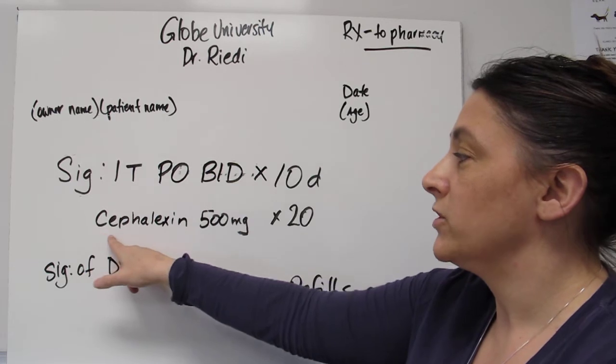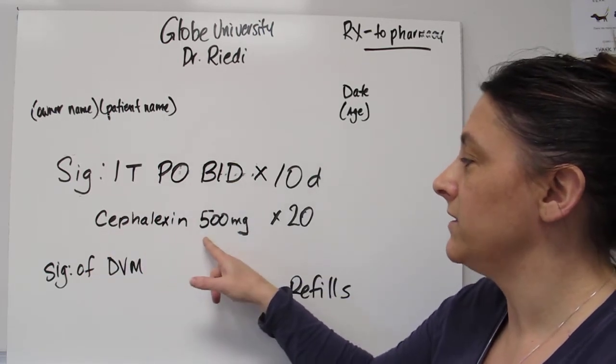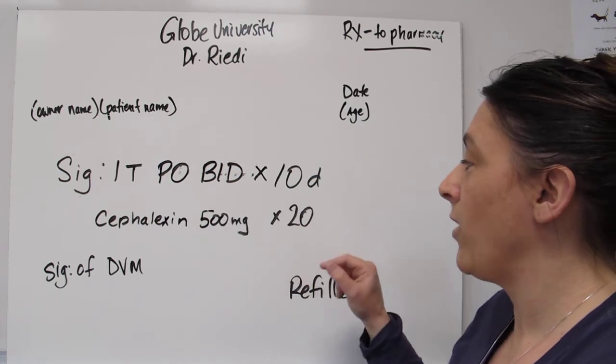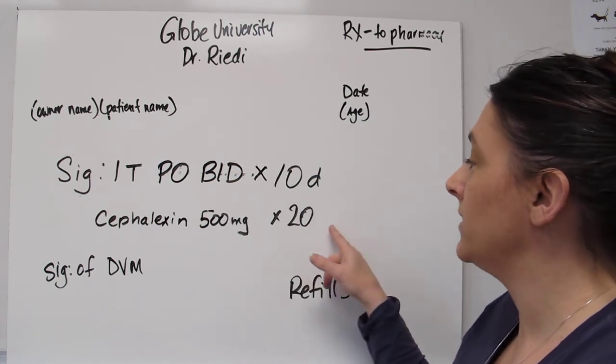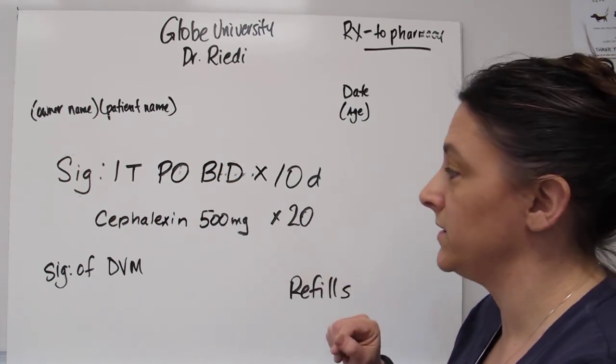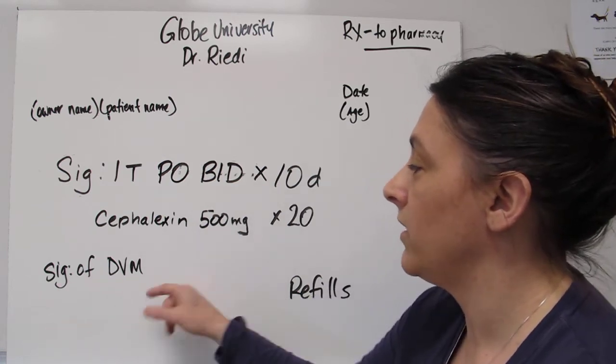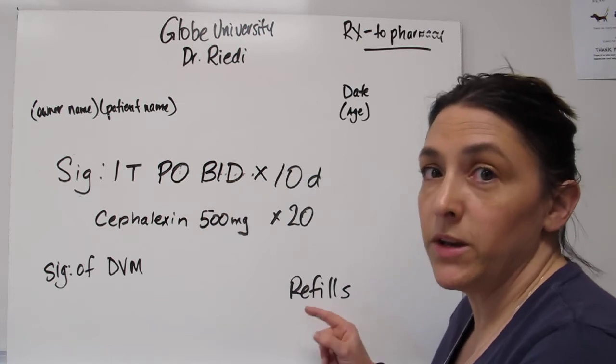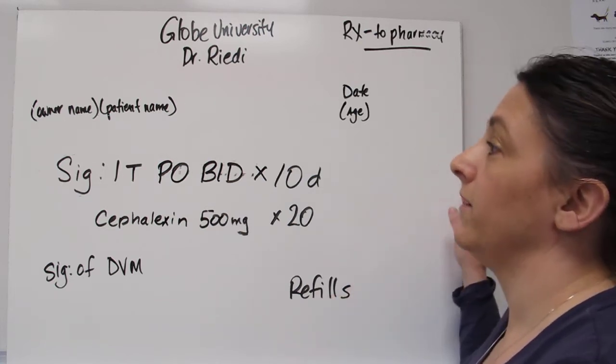The name of the drug, Cephalexin, the strength of the drug 500 milligrams, and then how many days they want it or how many is the total they want. So 20 tablets. The signature of the veterinarian needs to be there and then the other thing that's important is the refills. How many refills does the veterinarian want to give?